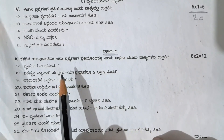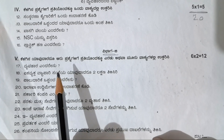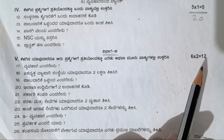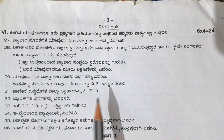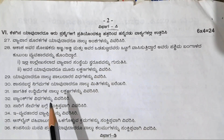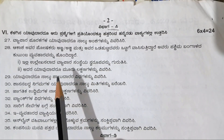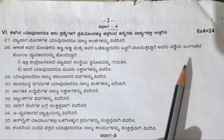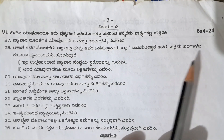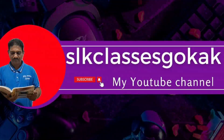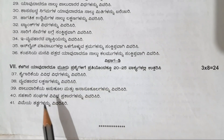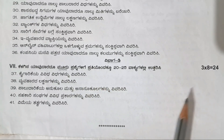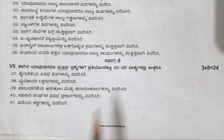In section B, there are 10 questions out of which you can write six questions, two marks each, the total is 12 marks. Section C: there are 10 questions out of which you can write six questions, four marks each, 24 marks. In the last section D, there are five questions, you can write any three, eight marks each, the total is 24 marks.